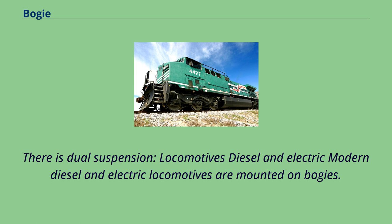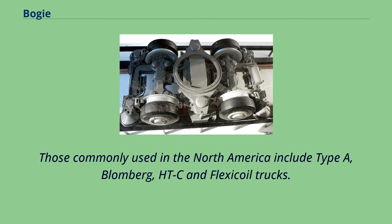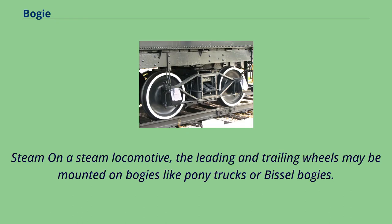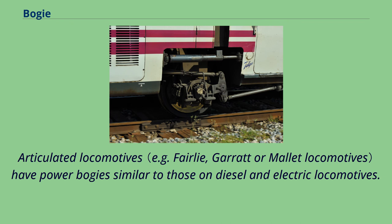Modern diesel and electric locomotives are mounted on bogeys. Those commonly used in North America include Type A, Blomberg, Hi-C, and Flexicoil trucks. On a steam locomotive, the leading and trailing wheels may be mounted on bogeys like pony trucks or Bissell bogeys. Articulated locomotives have power bogeys similar to those on diesel and electric locomotives.